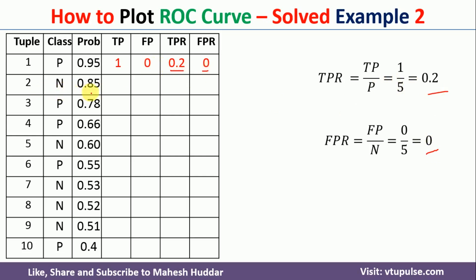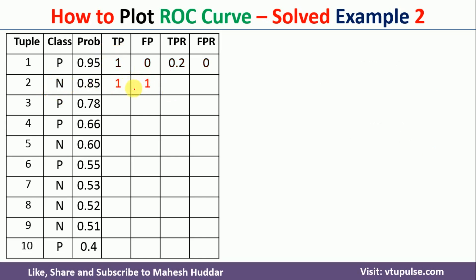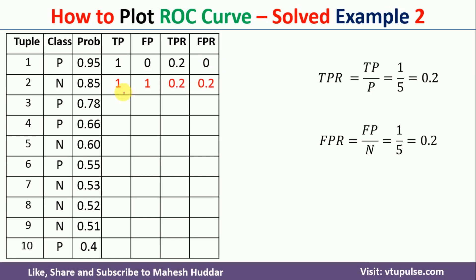Taking the second example: the current probability is 0.85, so we consider 0.85 as the threshold. Anything greater than or equal to 0.85 is classified as positive. Now both the first and second examples are classified as positive, but one example has actual class negative and is classified as positive — making it a false positive. So true positive remains 1 and false positive is incremented to 1. TPR equals 1/5 = 0.2 and FPR equals 1/5 = 0.2.